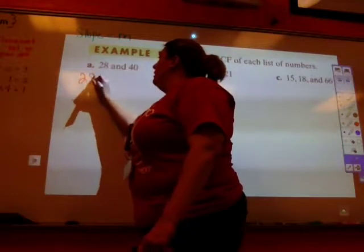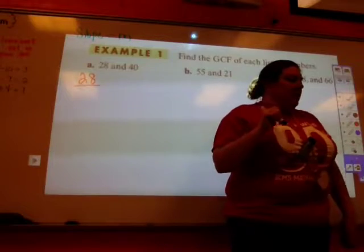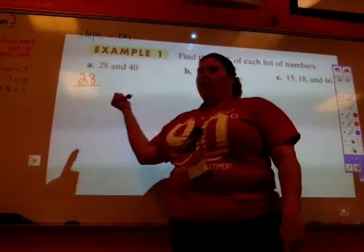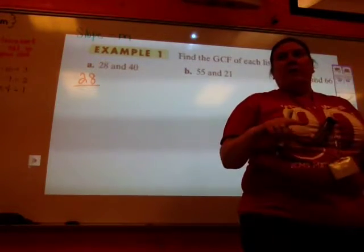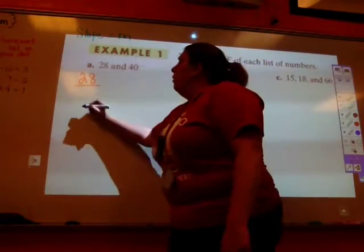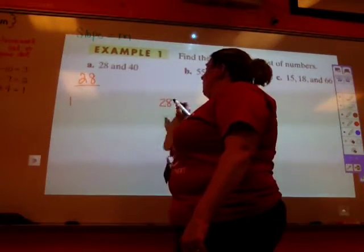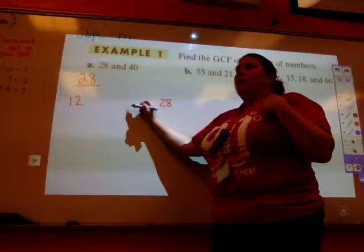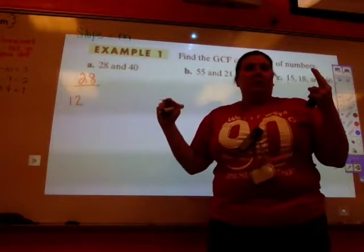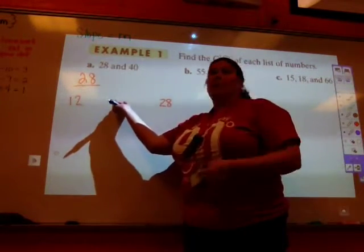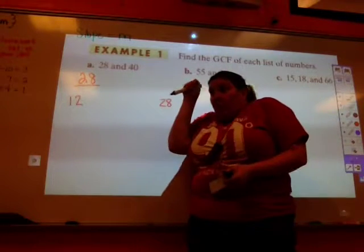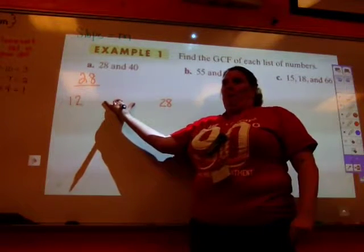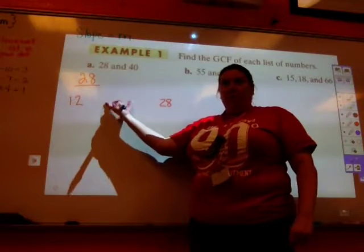So we're going to start first with 28 and 40. If I'm going to start with 28, I am going to need to think of all the numbers that can multiply to 28. Now I want you to think way back when you first started learning how to write the factors of numbers. You would go 1 and then 28. And then you would go, okay, 2 and... And one of two things either happened. You either got to the middle and you didn't have enough room, so then you had to write real small. Or you got them all written and then you had this huge gap here.